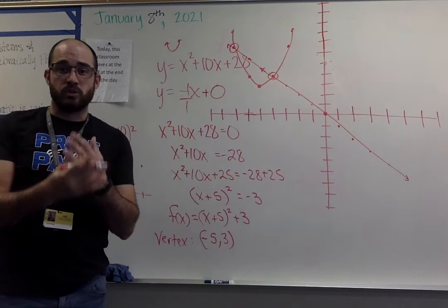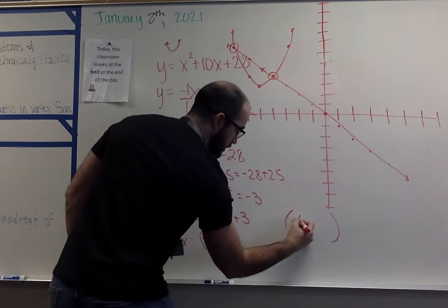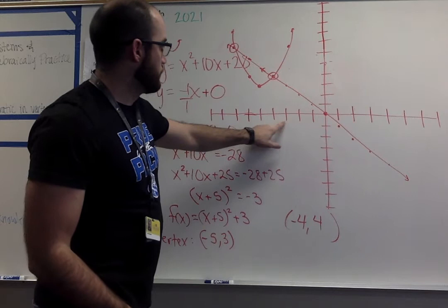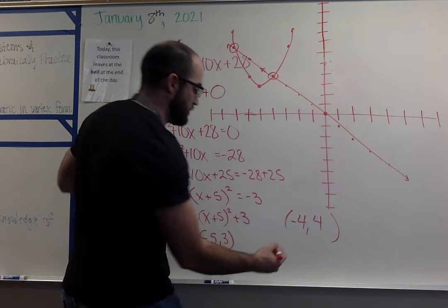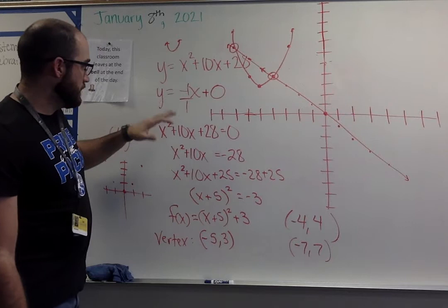Graphically, then, you can see visually where those two things intersect. They're going to be your solutions. They should always be a point. So for this one, I would be at negative 4, positive 4 is one point. My other point over here is negative 7, 7. And those would be my two points that are my solutions for this problem.